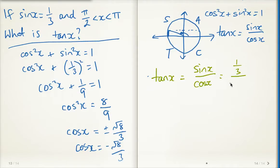Cos x, I just discovered, was negative root 8 divided by 3. So I just need to evaluate this. So that's one third multiplied by negative 3 over root 8. These 3s will cancel out. That will give me negative 1 on root 8.